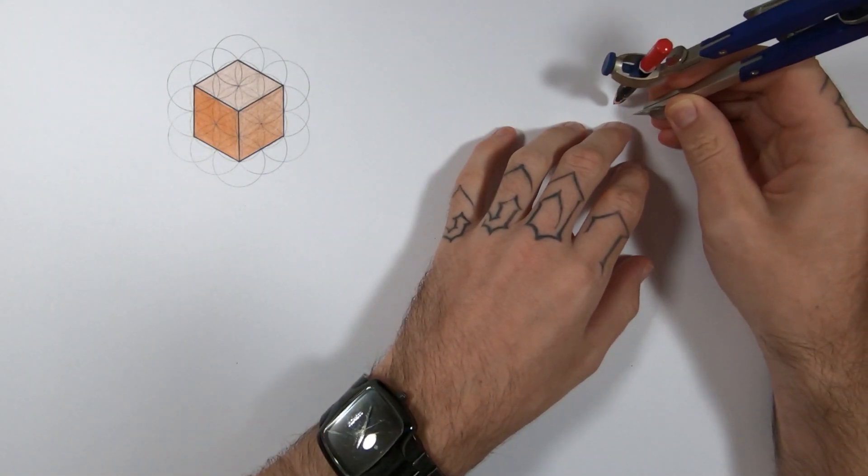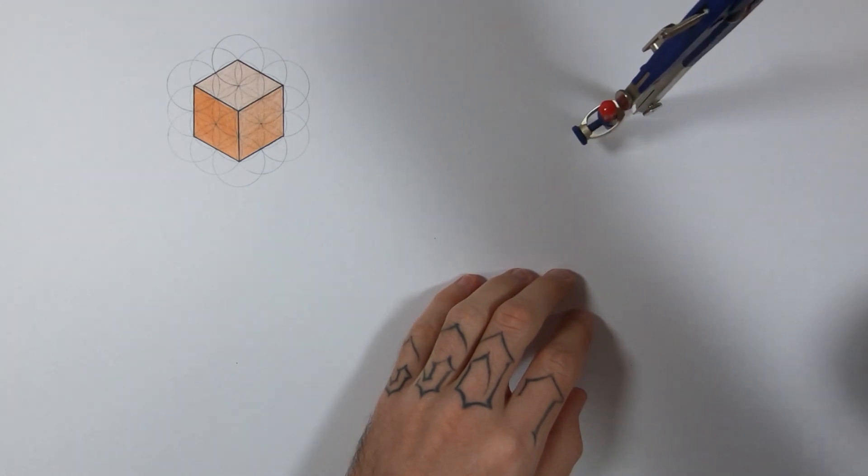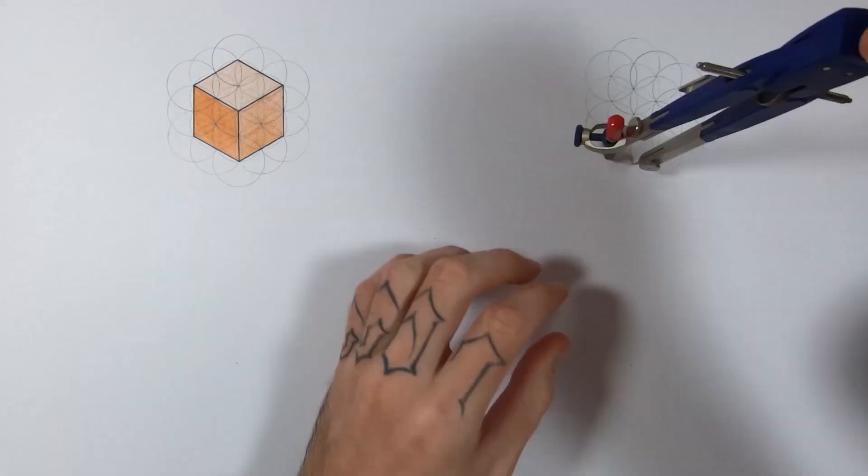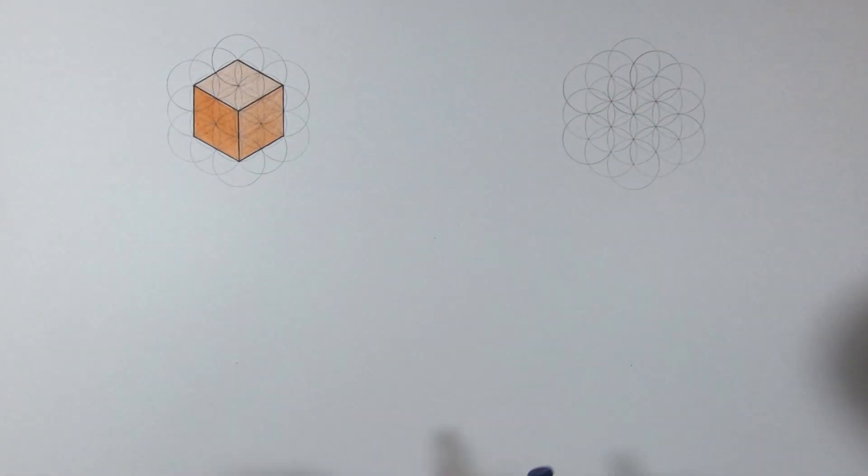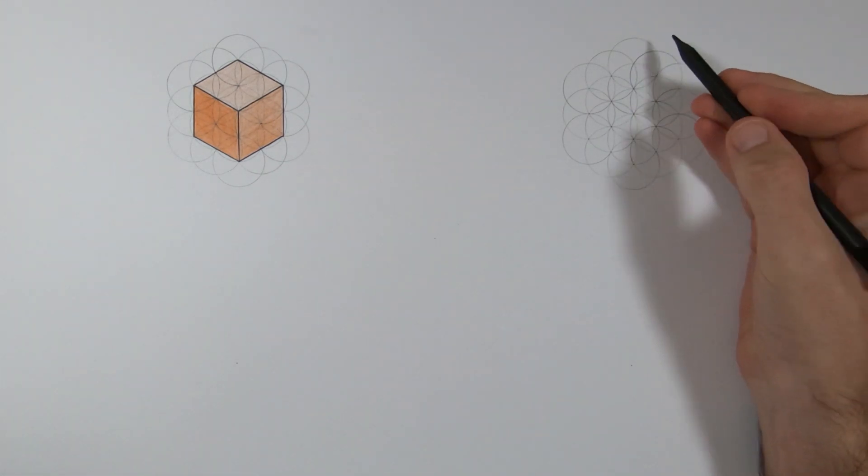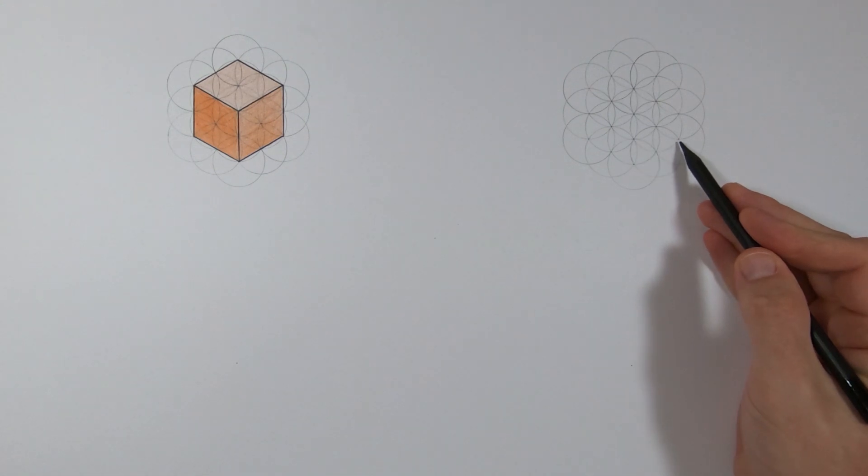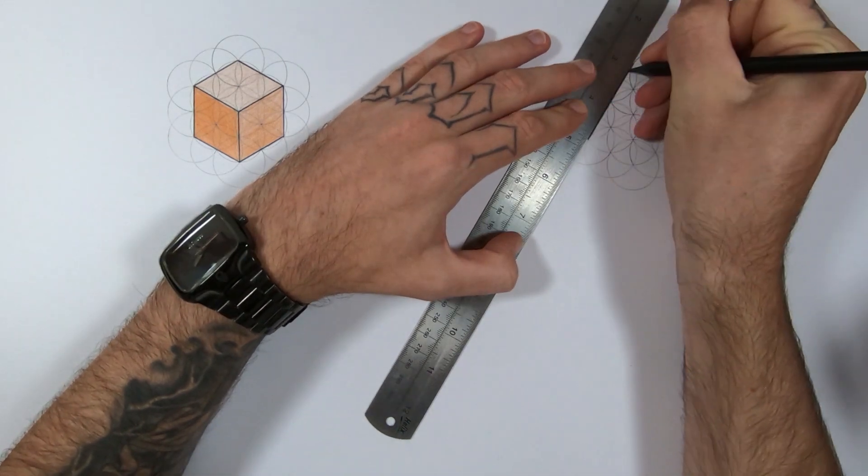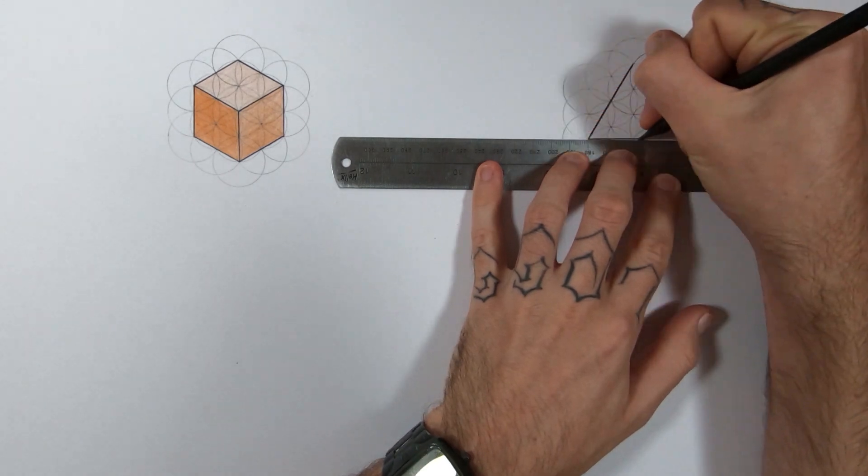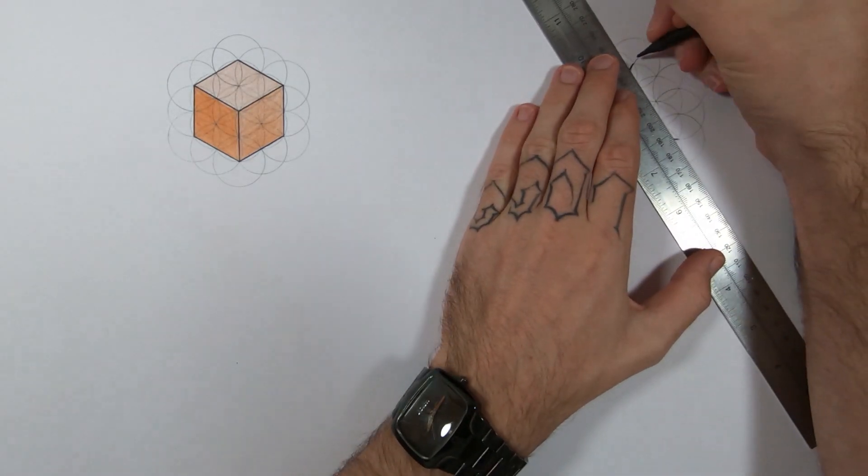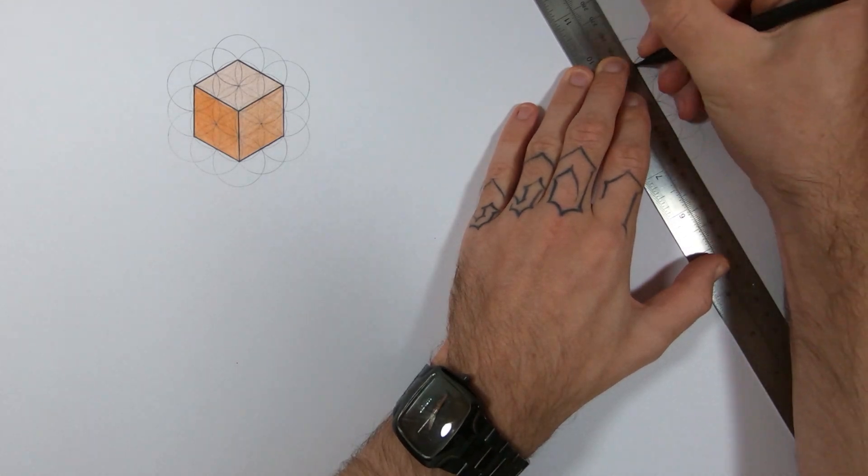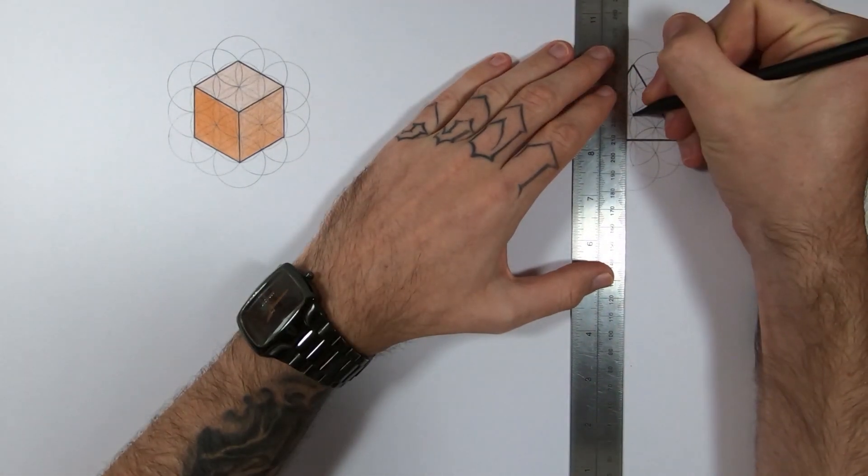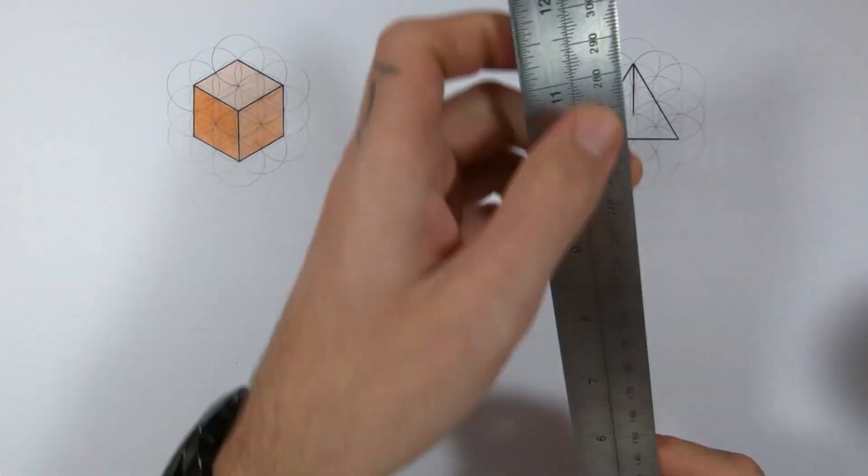Alright, next is the tetrahedron. I'm gonna draw another flower of life, same amount of circles, 19, and I'm gonna connect three of the outer intersections to make an equilateral triangle and then connect these corners to the center and there's your tetrahedron.